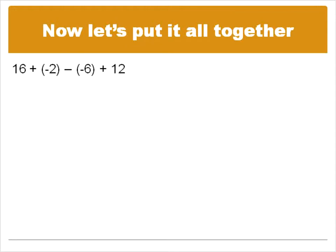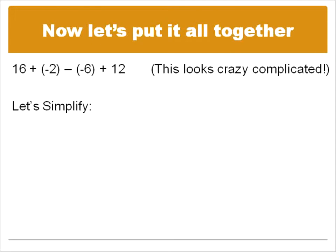Alright. Now we're going to do one question where we put everything all together. This is exciting. So here we have sixteen plus negative two minus negative six plus twelve. If we remember to simplify this question, then the first step that we will do is to rewrite the question with a lot less, basically getting rid of our parentheses.